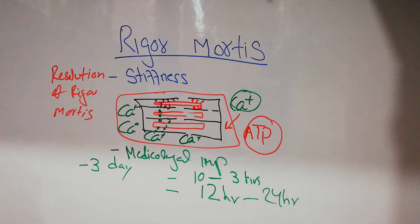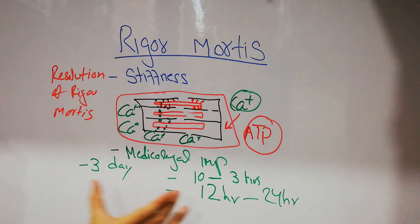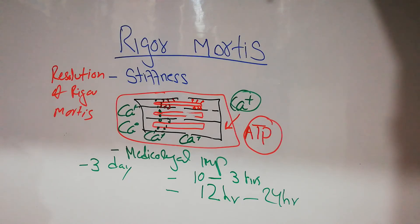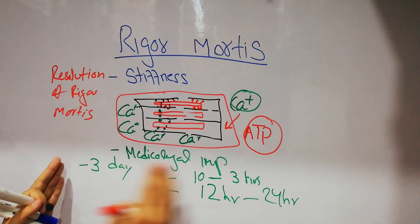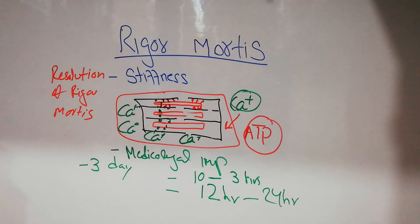The medical-legal importance is that the duration of death or murder can sometimes be determined. There are fixed times: rigor mortis starts within 10 minutes to 3 hours depending on the temperature of the environment — if the temperature is high, rigor mortis starts early; if low, it starts with some delay. The peak is within 12 to 24 hours and it mostly lasts for 3 days. These time parameters help the forensic department determine the time of death. That's all about rigor mortis.